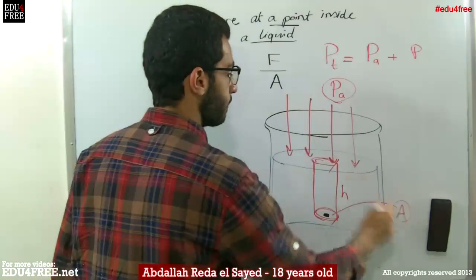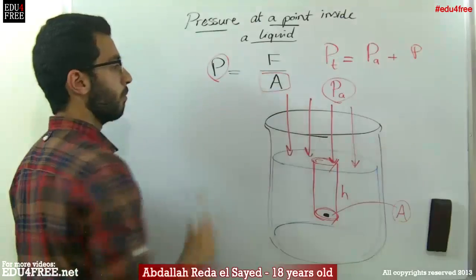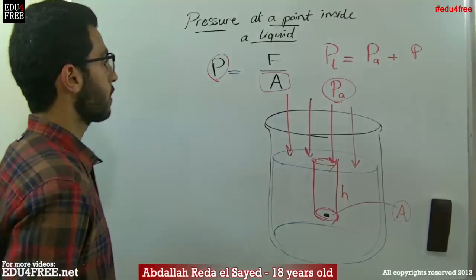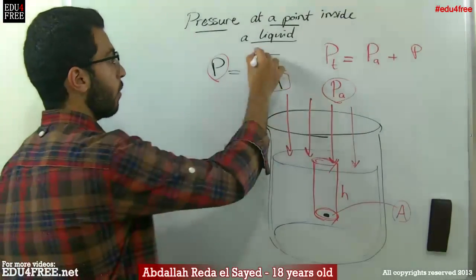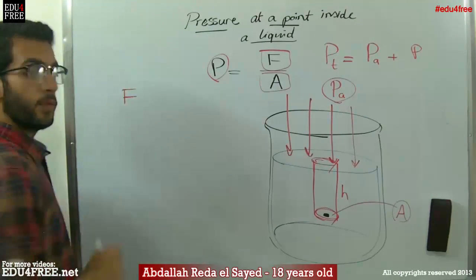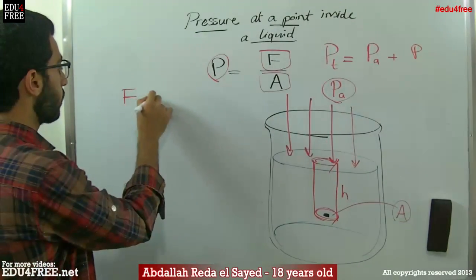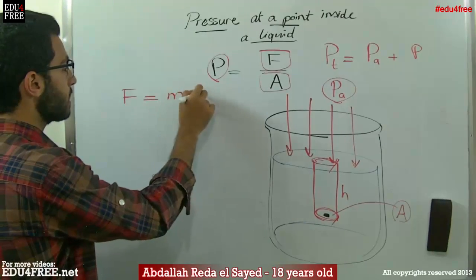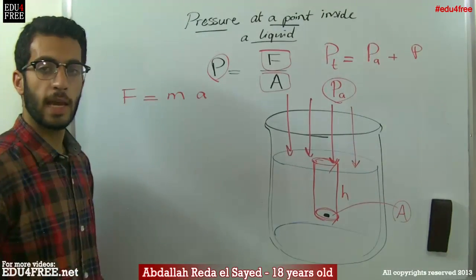We know A already, but we don't know F. So, F, the force, equals mass multiplied by the acceleration.